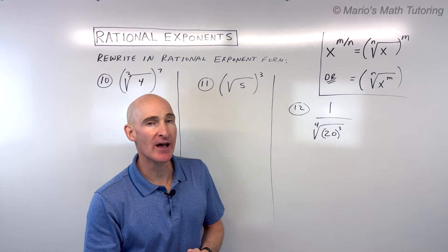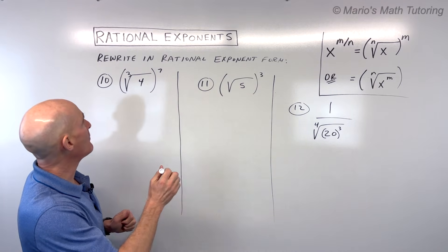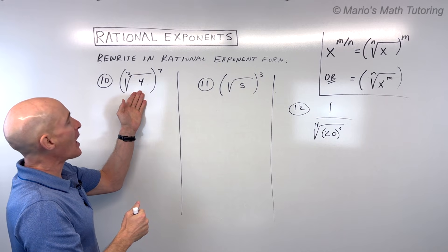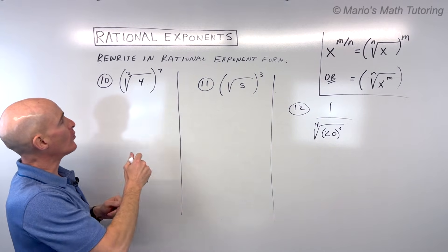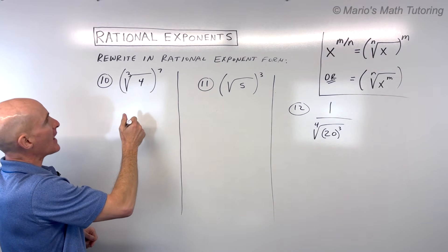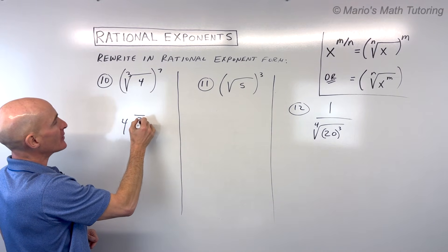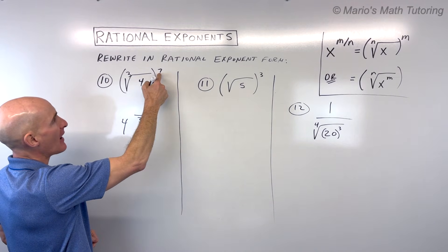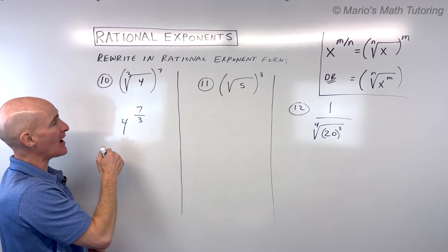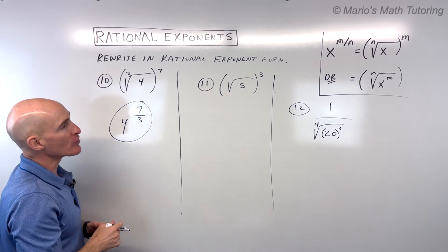For number 10, how do we go to rational exponent form? The base is 4. The index or root goes in the denominator, and the power goes in the numerator. So this is just 4 to the 7 thirds power.